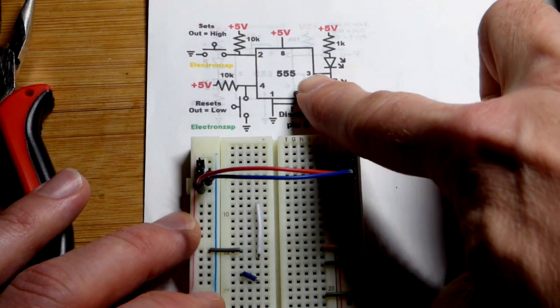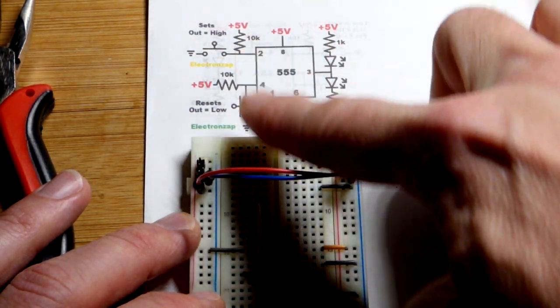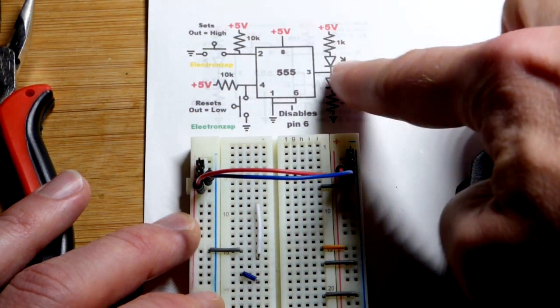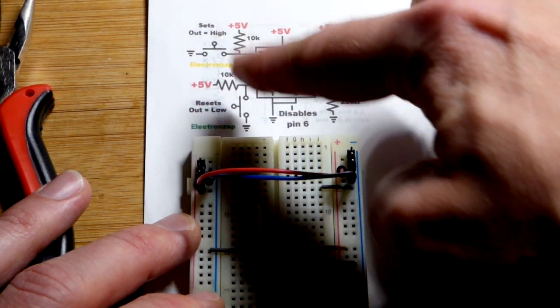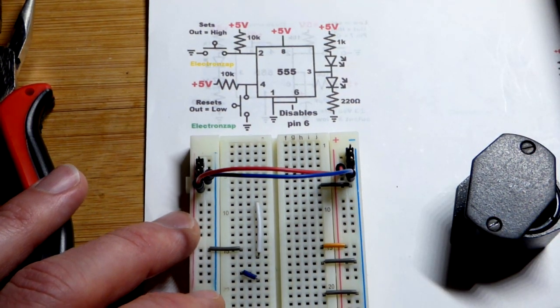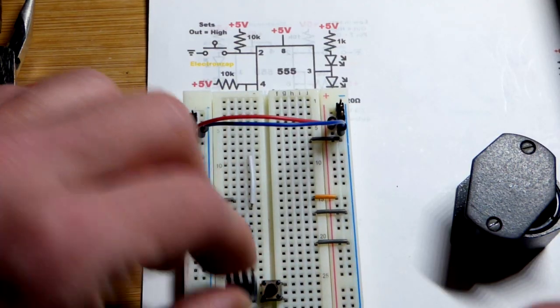Now we're going to do a step-by-step build of the 555 timer in bi-stable mode. That means the output can either be high or low. It doesn't change until we press a button, and then it will stay in that state until we press the other button.